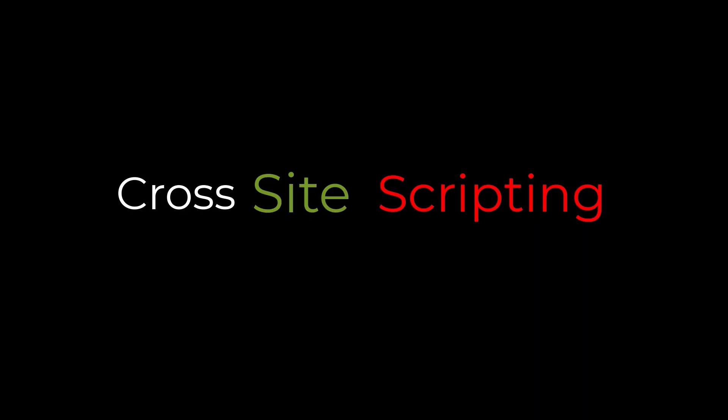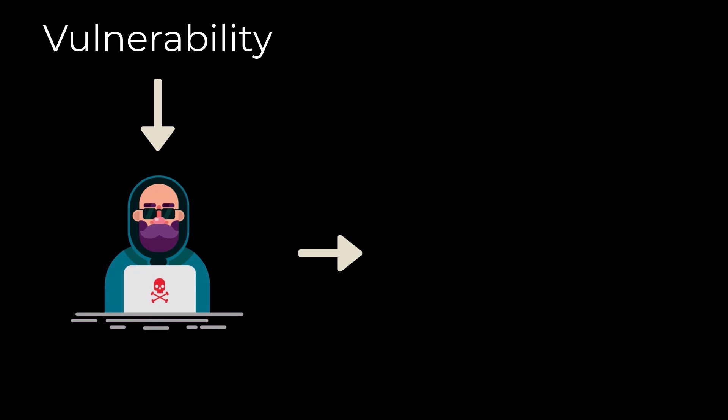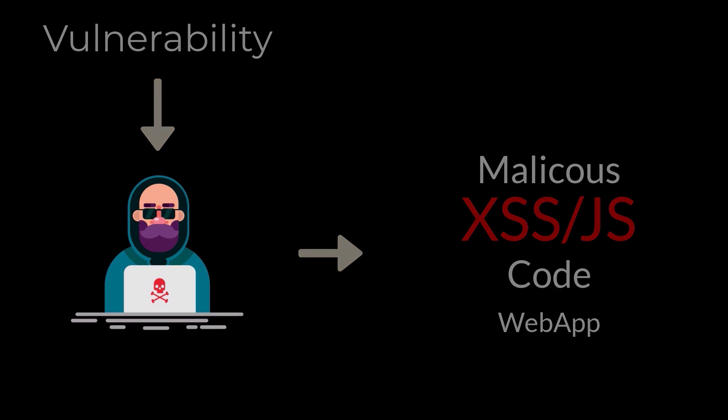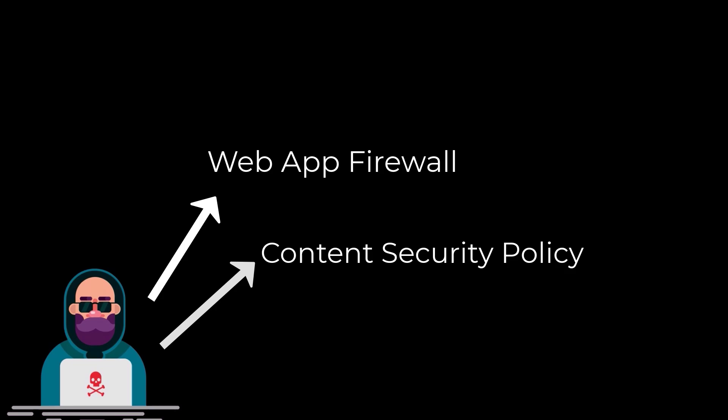Cross-site scripting is a vulnerability that allows an attacker to inject malicious JavaScript code into a web application. It seems like a very easy type of vulnerability, but sometimes it can be very difficult to find when we have a web application firewall or content security policy implemented, which is also known as CSP.